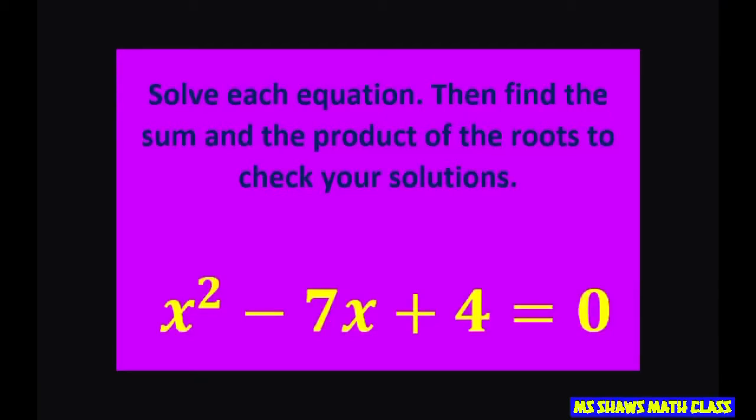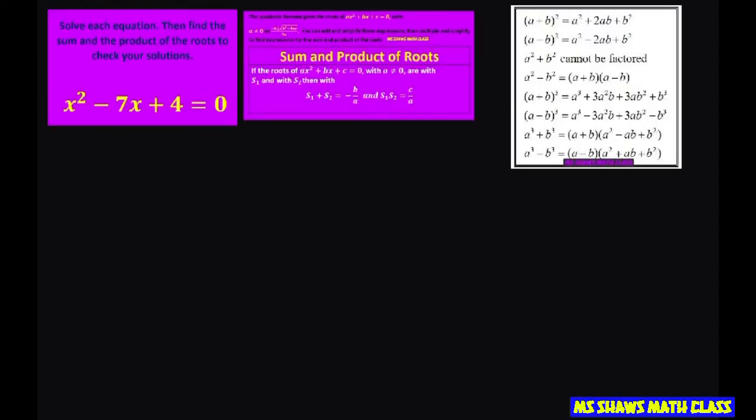Hi everyone, we're going to solve x² - 7x + 4 = 0, then find the sum and product of the roots to check our solution. For this one we can't factor it, so we're going to have to